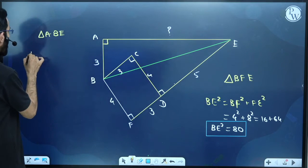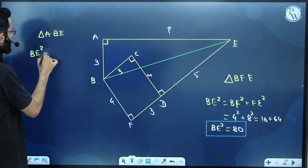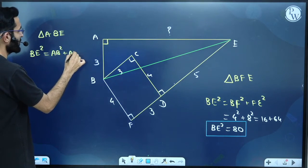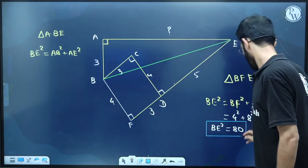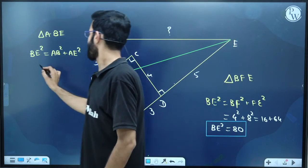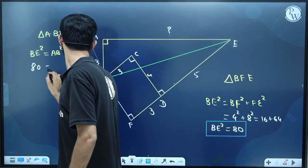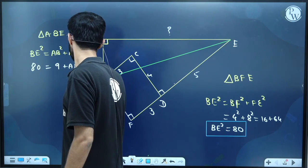So BE square is equal to AB square plus AE square. Recently we got BE square as 80. If I substitute BE square as 80, AB square is 3 square, which is 9. This is AE square.